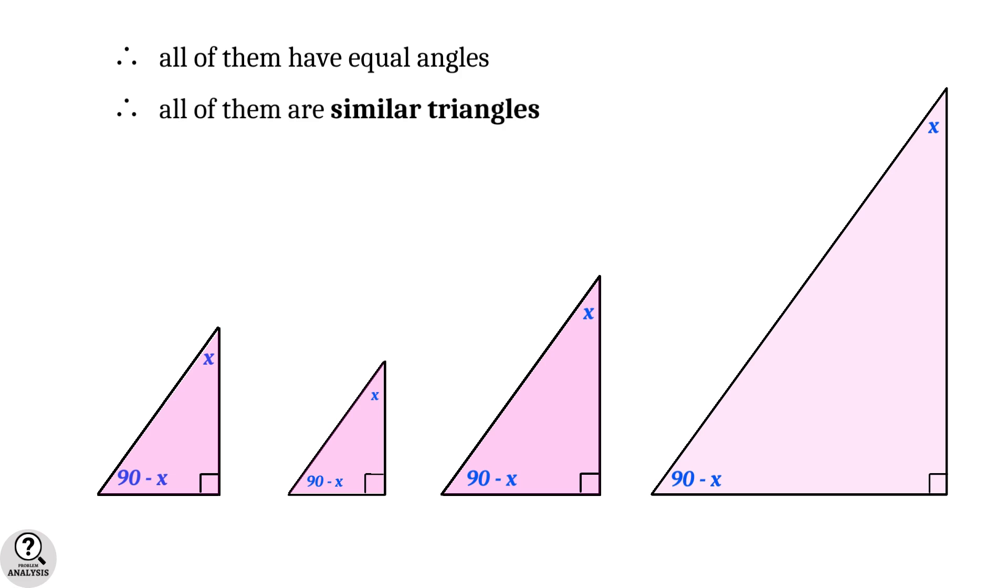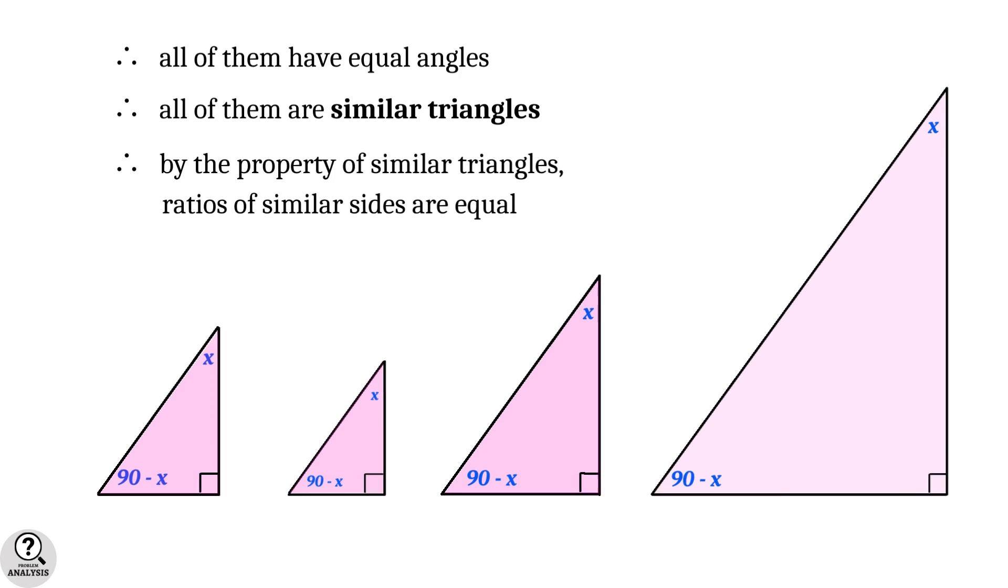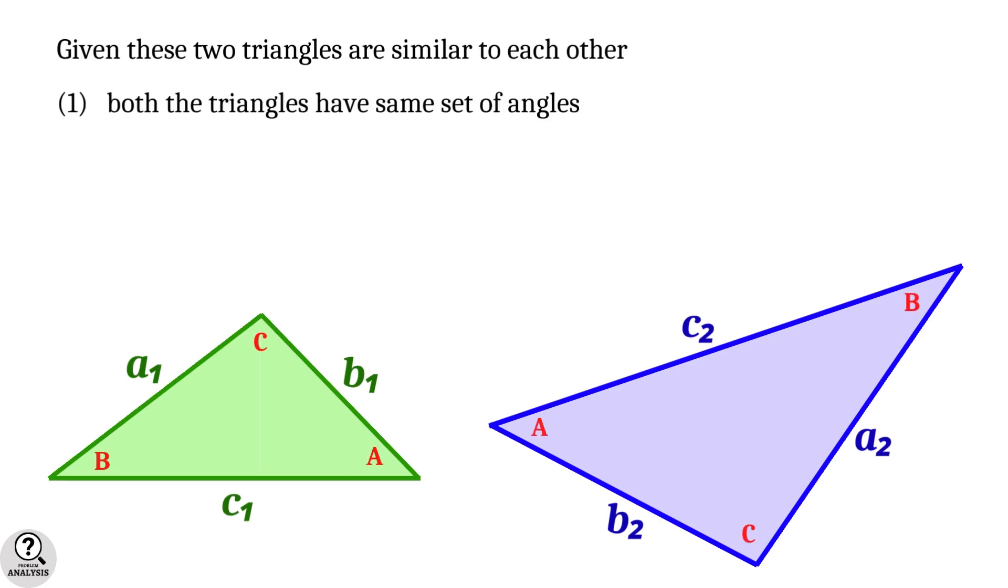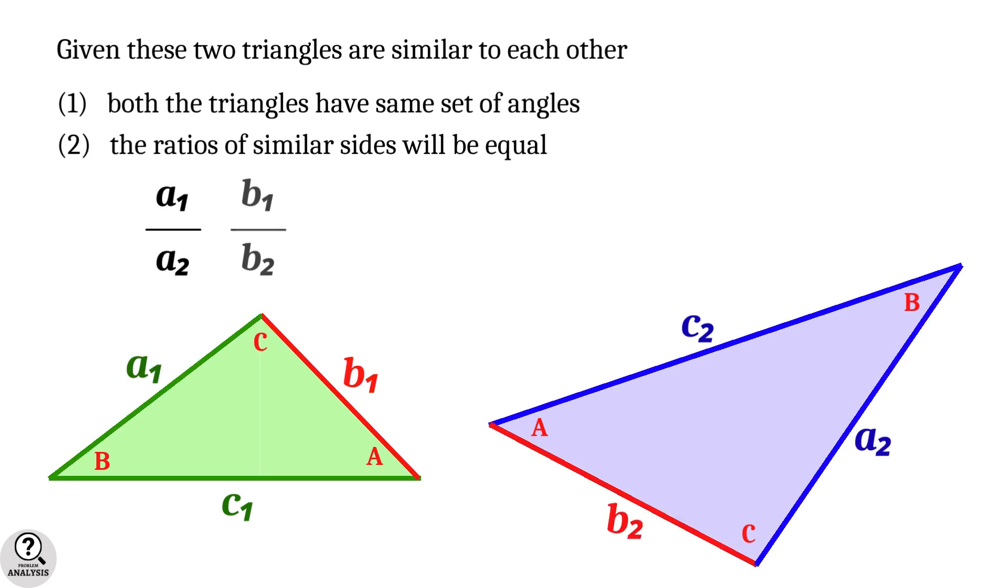And therefore, by the property of similar triangles, the ratio of similar sides are equal. Before proceeding, remember the important properties of similar triangles: if we have two triangles which are similar to each other, the first property is that both triangles have the same set of angles, and the second property is that the ratios of similar sides will be equal—that is, the ratios a1 by a2, b1 by b2, and c1 by c2 are equal.